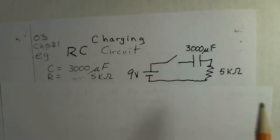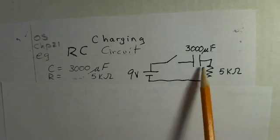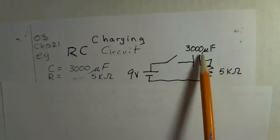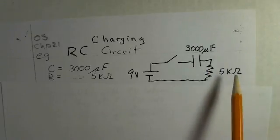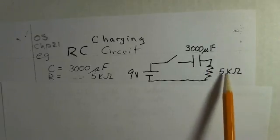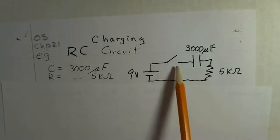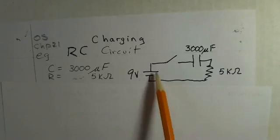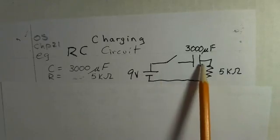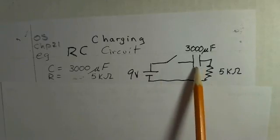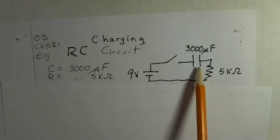To start with, investigating the charging operation of this capacitor. A 3,000 microfarad capacitor, 5 kiloohm resistor, that's 5,000 ohms. We're going to close this switch at time equals zero. The 9 volt battery is going to supply charge to the capacitor. Initially, the capacitor charge is zero. The potential across the plates of the capacitor is zero.